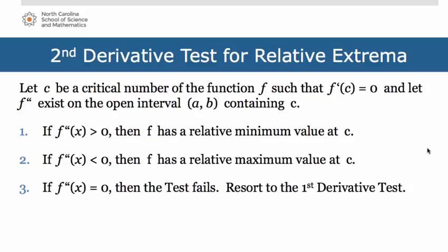That brings us to the formal statement of the second derivative test for relative extrema. Let C be a critical number of f such that f prime of C equals 0, and let the second derivative of f exist on an open interval containing C. If the second derivative is greater than 0, then f has a relative minimum at C. If the second derivative is less than 0, then f has a relative maximum at C. If the second derivative equals 0, the test fails and you must resort to the first derivative test instead.